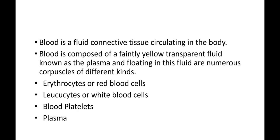Plasma blood ke volume ka lagbhag 55% tatha corpuscles 45% tak hote hain. Blood mein 3 tarah ke corpuscles paye jaate hain: pehla Erythrocytes ya Red Blood Corpuscles, Leukocytes ya White Blood Corpuscles, aur Blood Platelets.